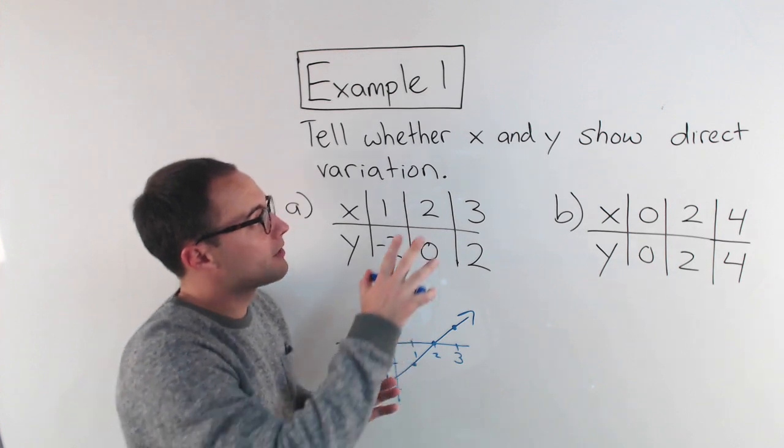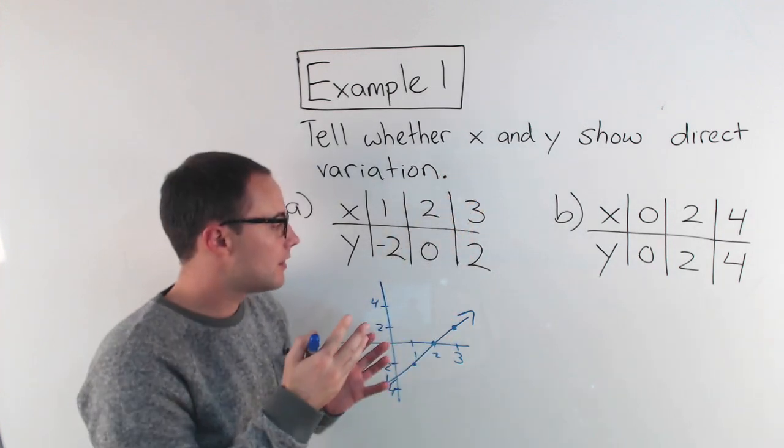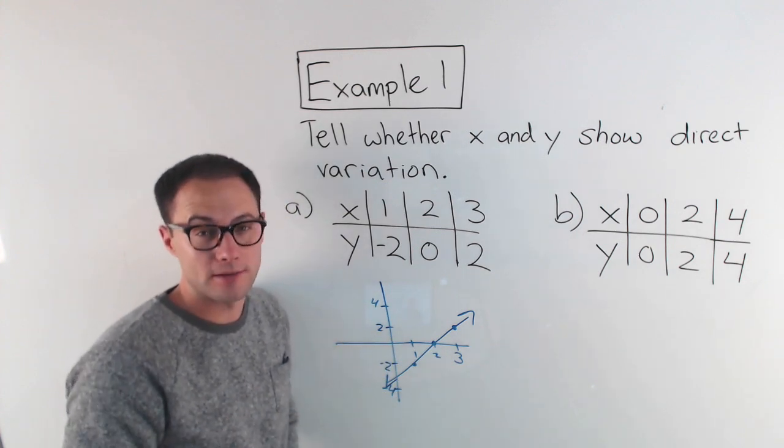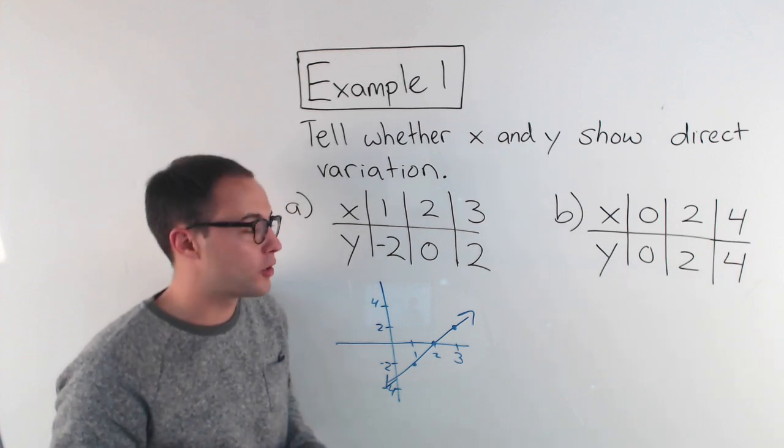Now, one other thing. For x and y to have direct variation, if you graph it, the line has to go through the origin. Okay. That's really important. You should write that down. It has to go through the origin.